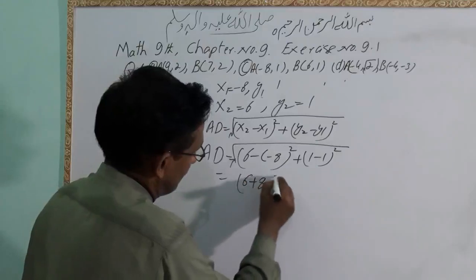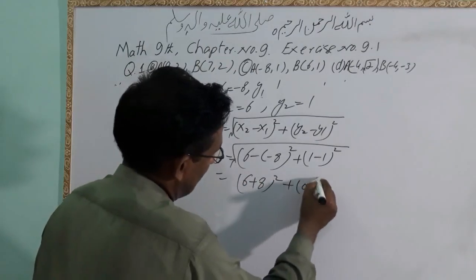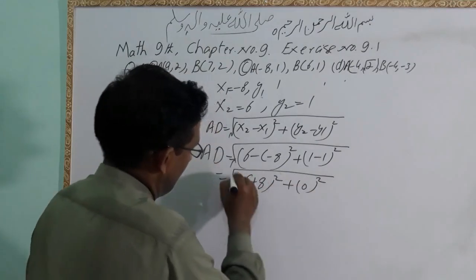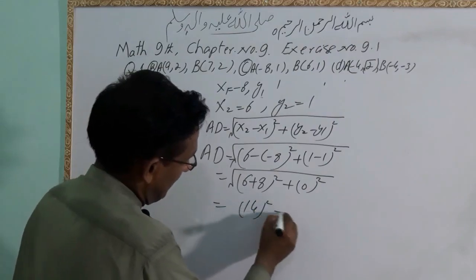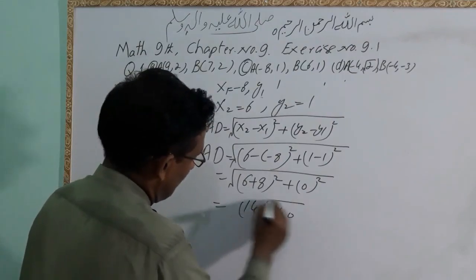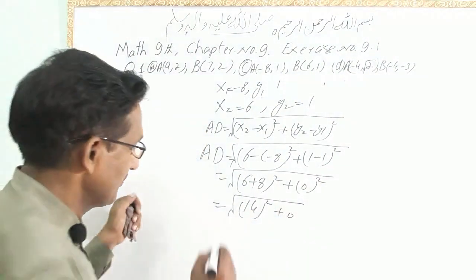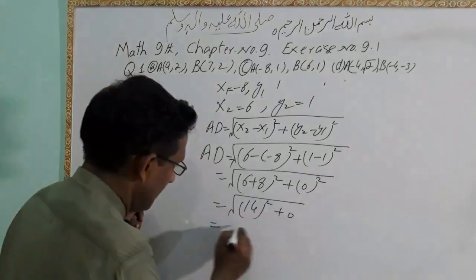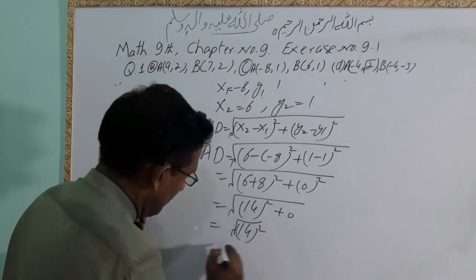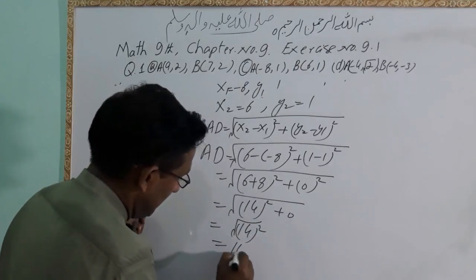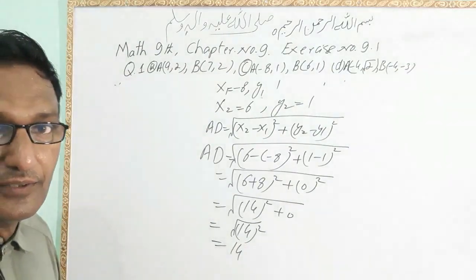That gives 14 squared plus 0, this is 0. So 14 squared, and the square root cancels — the answer is 14.